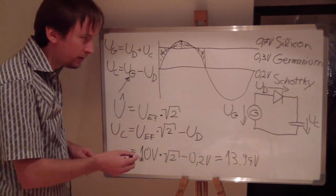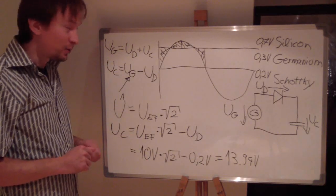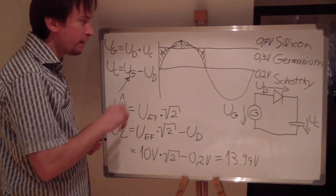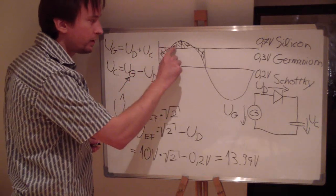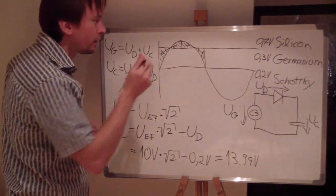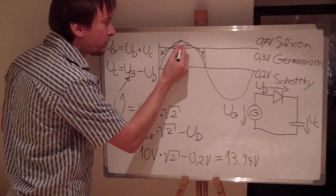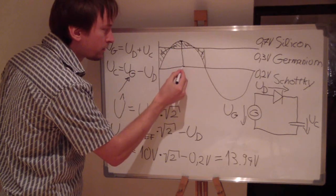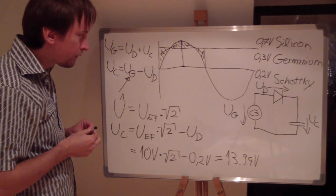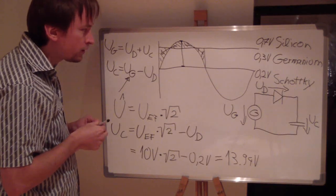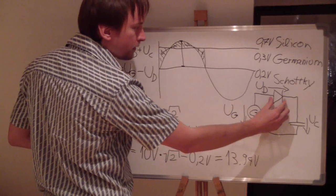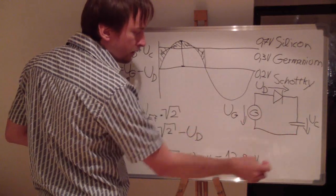Now we have the voltage here. You can see it is already a gain of voltage because we put 10 volts in and we get out 13.94 volts — that is more than we put in. Not really, because the effective value is one thing and the peak voltage is another. This is the peak voltage. From the peak voltage we subtract the loss — the voltage loss of the diode — and we get this value.